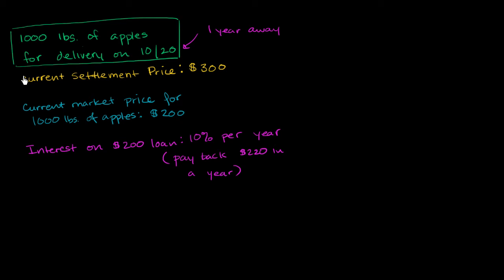Let's say that the current market settlement price for a futures contract that specifies the delivery of 1,000 pounds of apples on October 20th. And just for the simplicity of the math in this example, let's assume that that is one year away.